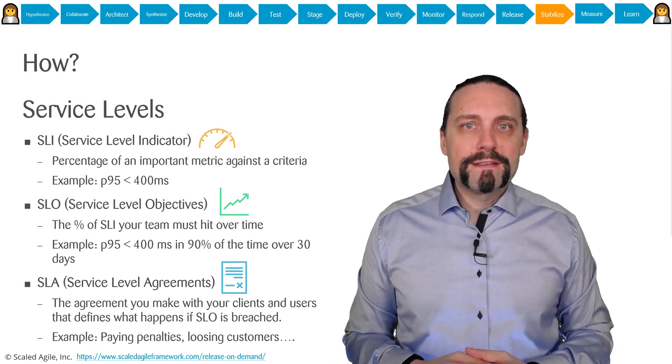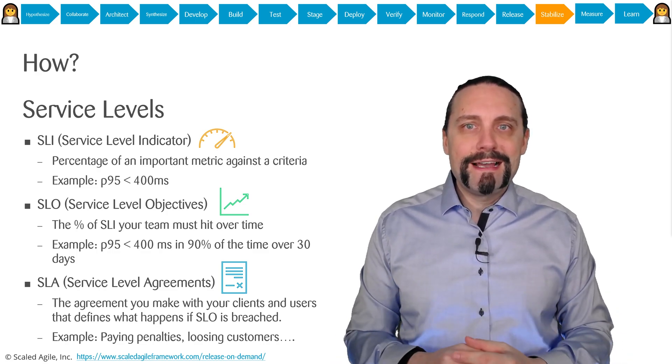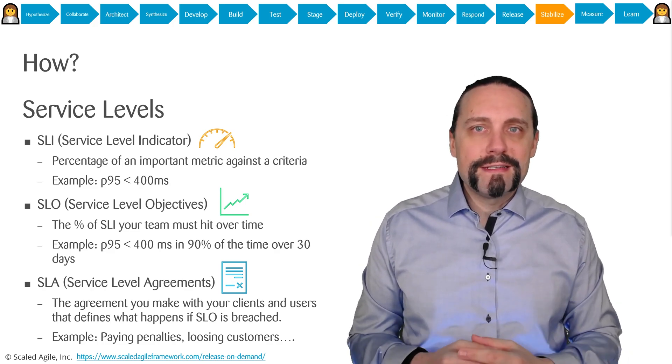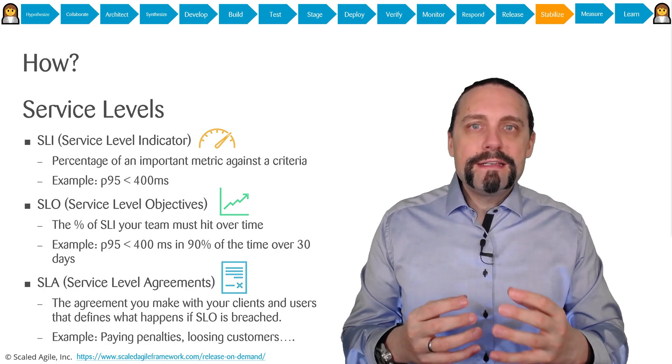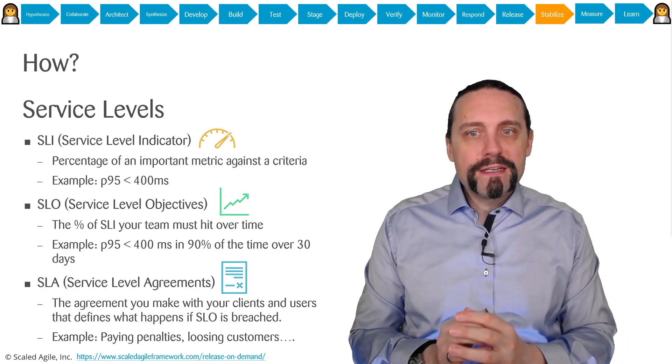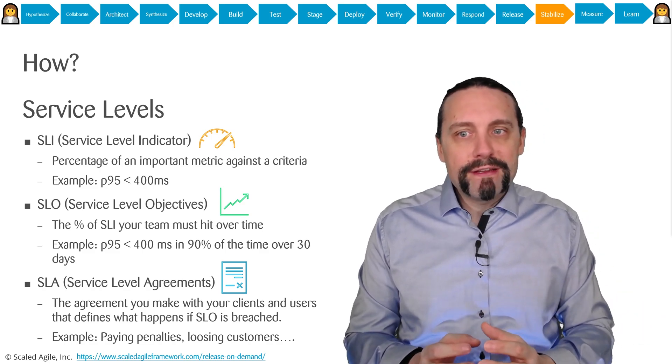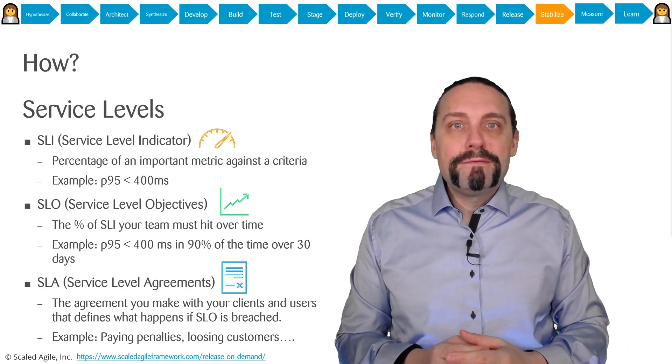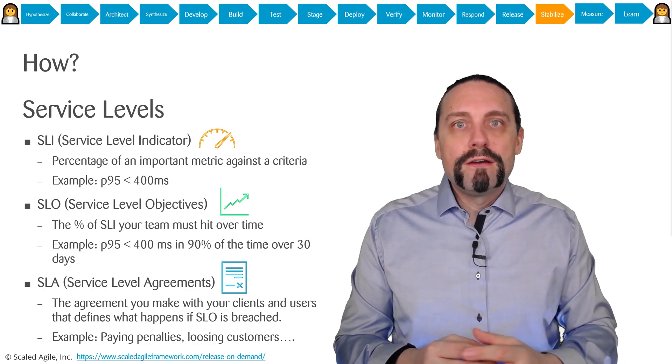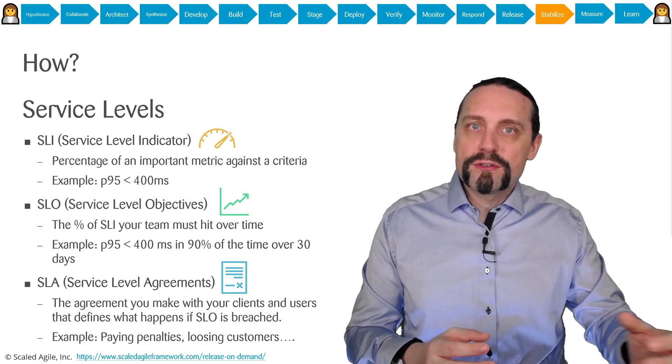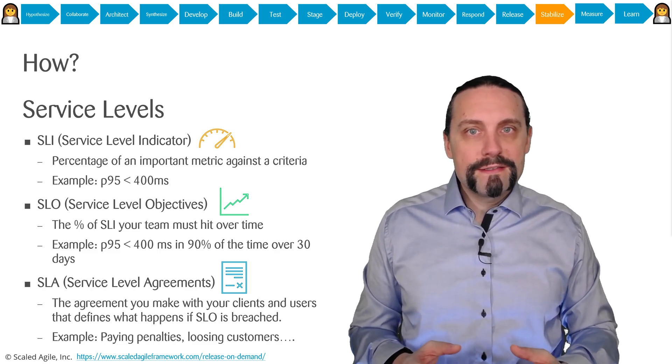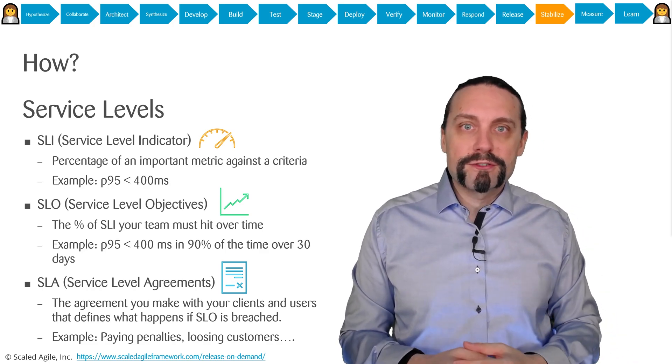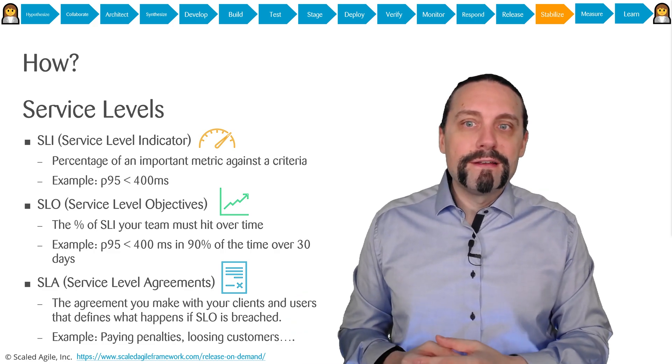This brings us to the SLIs, SLOs, and SLAs. An SLI is a service level indicator. It is a percentage of an important metric which we have against a certain criteria. For example, in the 95th percentile we want to have a response time smaller than 400 milliseconds on a certain interface. You can see such an SLI can already be a non-functional requirement, or a non-functional requirement can be a service level indicator.